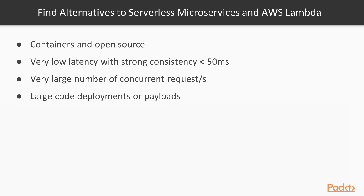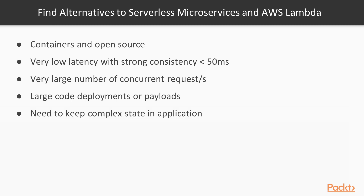If you have large code deployments, Lambda currently has a limit of 250 megabytes on the code and dependencies as a package before any compression is done, and also a deployment limit of 50 megabytes compressed as a zip, which is relatively small, especially for Java. There are also limits on disk space — 500 megabytes limit on local storage. The same goes for when you have a large API request with a big payload; the maximum is a 6 megabyte request or response payload size in API Gateway. In addition, if you need to keep complex state in an application, then Lambda functions are not suitable unless you use Step Functions. Generally, it's a bad idea to maintain state within a service, as it makes it more complex to scale out and recover from crashes.